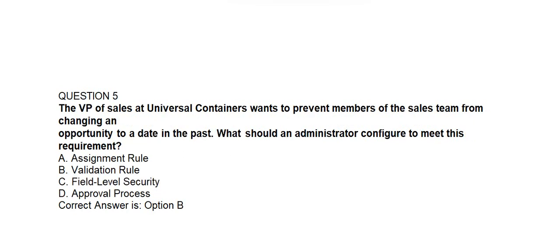Question number 5. The VP of Sales at Universal Containers wants to prevent members of the sales team from changing an opportunity to a date in the past. What should an administrator configure to meet these requirements? Option A: Assignment Rule. Option B: Validation Rule. Option C: Field Level Security. Option D: Approval Process. Correct answer is Option B: Validation Rule.